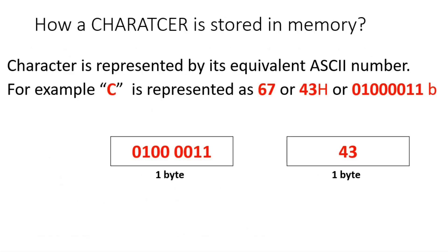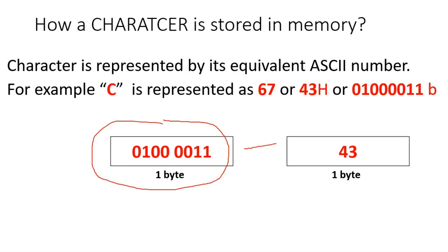Let me explain how a character is stored in memory using ASCII. Take character capital C — the ASCII of capital C is 67 in decimal. Converting to hexadecimal gives 43H, or to binary as an 8-bit value. One ASCII number takes one byte of memory — eight bits. So how does character C look when stored in memory? It looks like one byte of binary data. We can also represent it using hexadecimal: 43H, where 4 takes 4 bits and 3 takes 4 bits — total one byte.